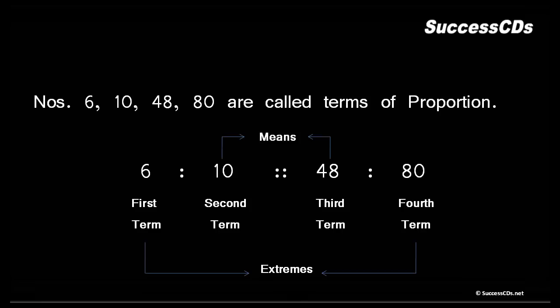The numbers 6, 10, 48, 80 are called terms of proportion. Let's try and understand this: 6 becomes first term, 10 becomes second term, 48 third term, and 80 fourth term. 6 and 80 are at the extremes - first and fourth - therefore these are known as extremes. The middle terms, the second and third terms, 10 and 48, are known as means.